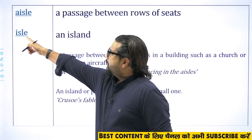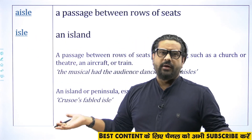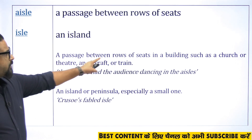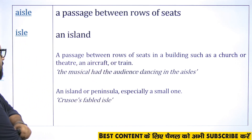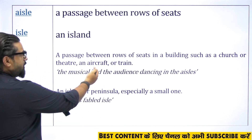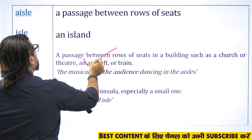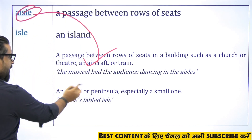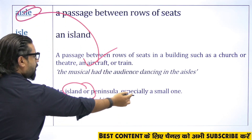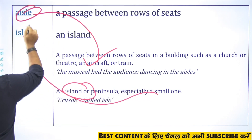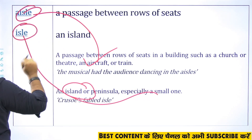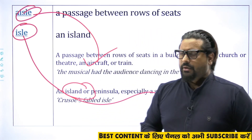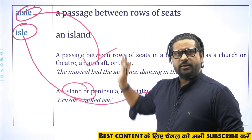'Aisle' (A-I-S-L-E) is a passage between two rows of seats in a building such as a church, theater, aircraft, or train. 'Isle' (I-S-L-E) means an island — especially a small one. So 'aisle' is a passage or walkway, while 'isle' is a small island. Keep them clearly separate.